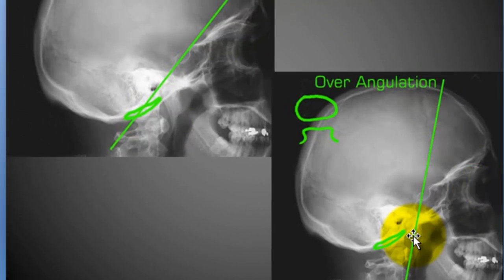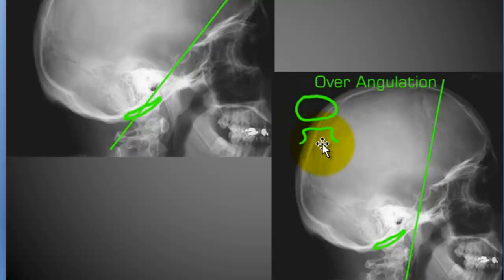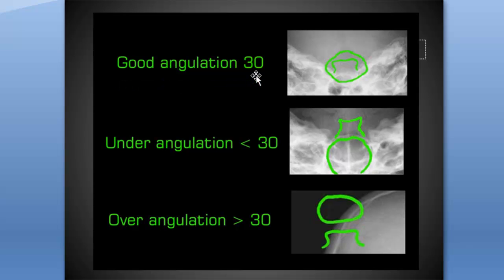Over-angulation looks more like an attempted SMV. It's less common to see over-angulation — you might notice this kind of representation on an attempted SMV. Either way you should know how to correct it. If the dorsum sella is below the foramen magnum, you are definitely over-angulated. You probably have the IOML pretty close to parallel to the film at that point. To review: good angulation gets the dorsum sella right in the middle — that's 30 degrees to the OML, or 37 degrees to the IOML. If you'd like to make the IOML perpendicular, or if you have no other choice such as a trauma patient, use those angles. Under-angulation projects the dorsum sella above the foramen magnum, and over-angulation depicts the dorsum sella below the foramen magnum.